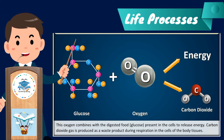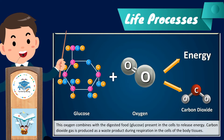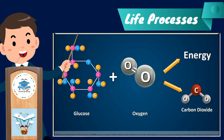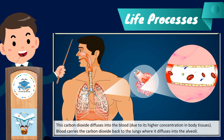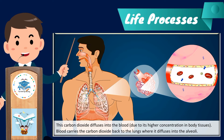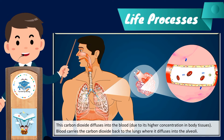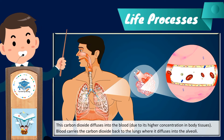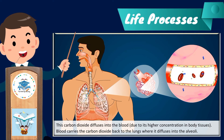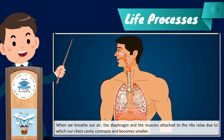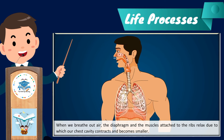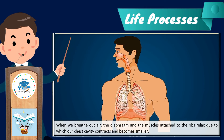Carbon dioxide gas is produced as a waste product during respiration in the cells of the body tissues. This carbon dioxide diffuses into the blood due to its higher concentration in body tissues. The blood then carries the carbon dioxide back to the lungs, where it diffuses into the alveoli.